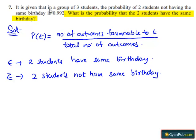It is given that in a group of three students, the probability of two students not having the same birthday is 0.992. That is P of E bar is given as 0.992.